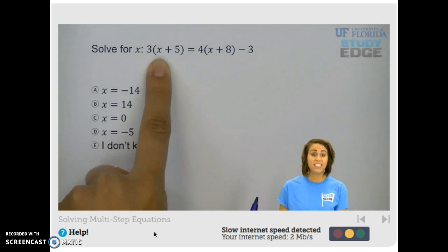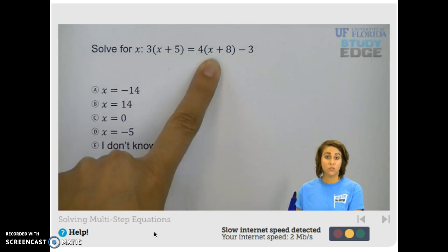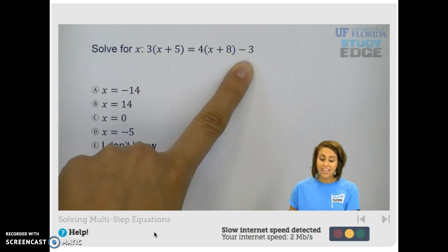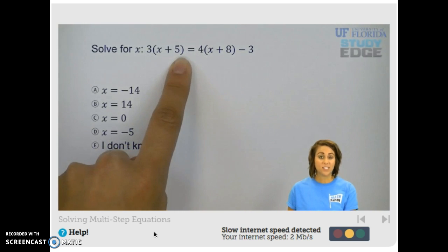Solve for x if we have 3 times x plus 5 equals 4 times x plus 8 minus 3. We want to get x here by itself. That's the goal.